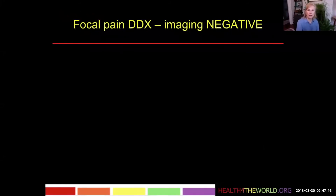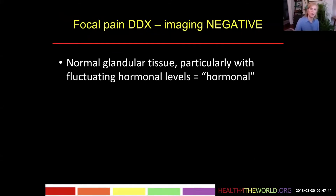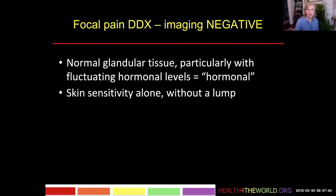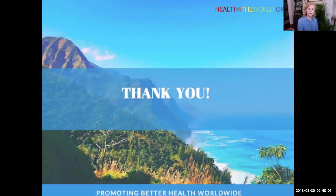What about focal pain where imaging is negative? It's very common for normal fibroglandular tissue to be painful, particularly if a woman has fluctuating hormonal levels like in the perimenopausal period. I will usually explain to the patient that it's a hormonal kind of pain, which is reassuring if all imaging findings are normal. Some patients will have skin sensitivity without a lump. And some patients have referred pain, nerve pain, pinched nerves, or cardiac pain that may present as breast pain. So that's the end of module two.